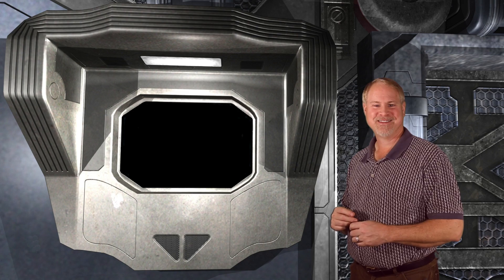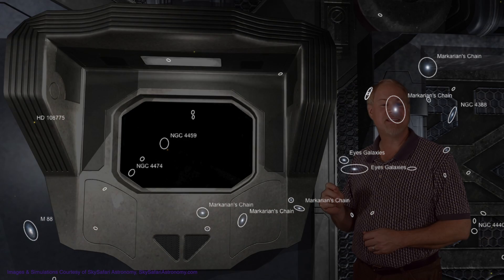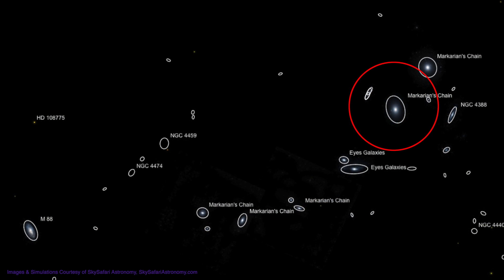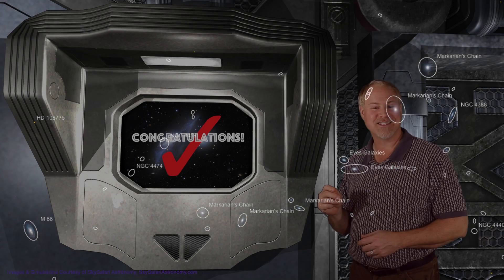Okay, let's head downward even further into the realm, toward the Eyes Galaxies. Center your eyepiece on M86, which is the lower of the pair of elliptical galaxies. Then drift down to the lower left about a half degree, and you'll run into a pair of spiral galaxies.